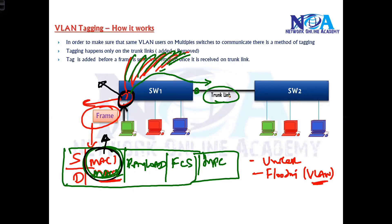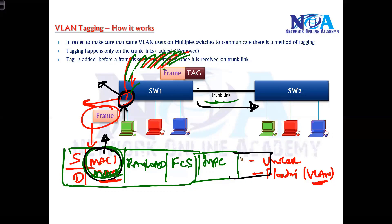This broadcast will also go on the trunk link, because the trunk link receives traffic for all VLANs by default. Now, before the trunk link actually forwards the frame to the next switch or device, it is going to do something called tagging — it will add a tag to that frame. Once the frame is received on the trunk link, the tag is added, and that tag includes the VLAN ID. So it writes that this frame belongs to VLAN 10. This additional tag is sent over the trunk link, because without the tag, the receiving switch cannot identify which VLAN the frame belongs to when the trunk link is carrying multiple VLAN traffic.